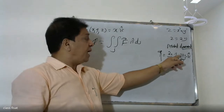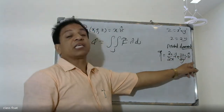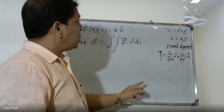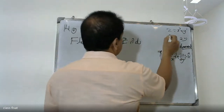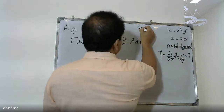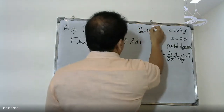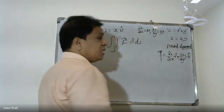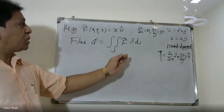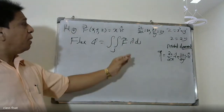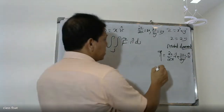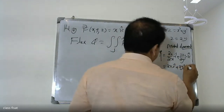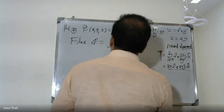So we take the partial derivatives: ∂z/∂x = 2x and ∂z/∂y = 2y. This is basically z = x² + y², and we partially differentiate with respect to x and y to get 2x and 2y.